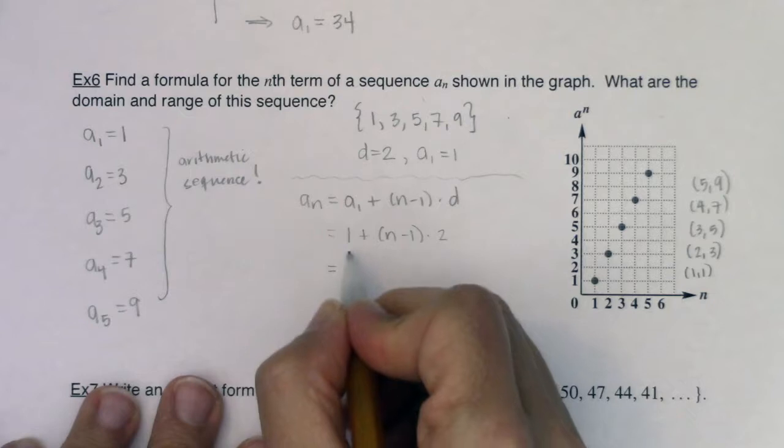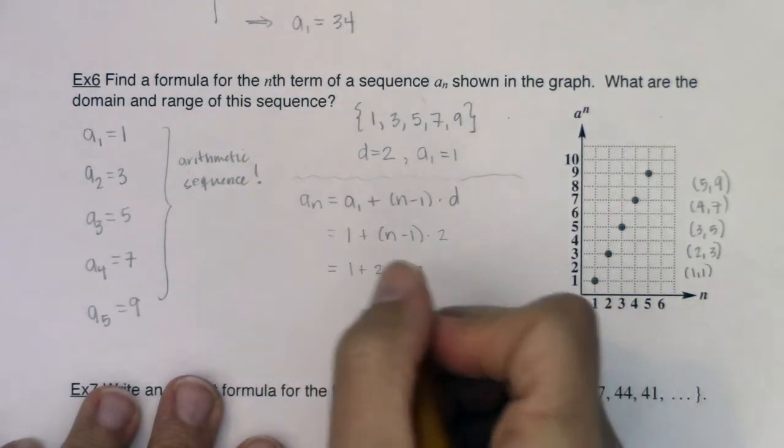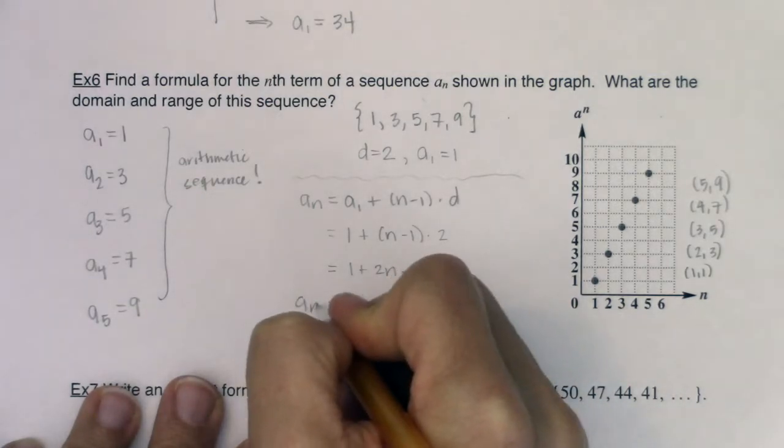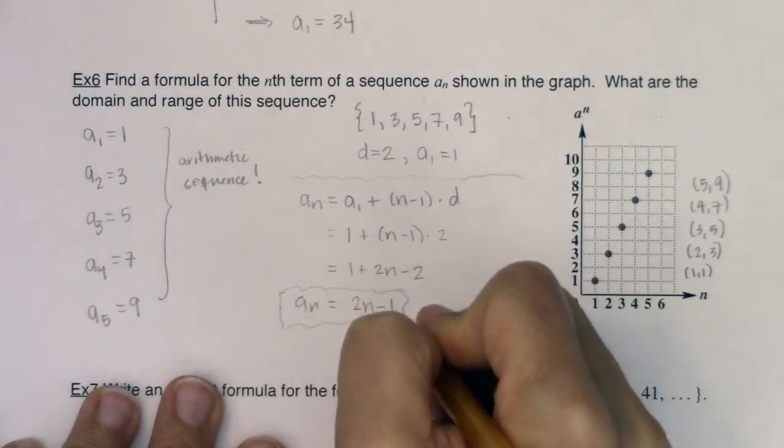Let's go ahead and play this out. a sub 1 was 1, I don't know what n is because I want the explicit formula, and d was 2. Let's simplify this a little bit. We've got 1, this would be plus 2n minus 2. So I can rewrite this as 2n minus 1. So there is my explicit formula.